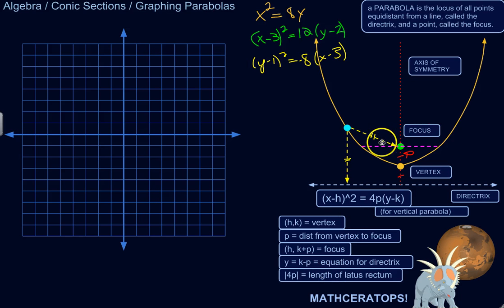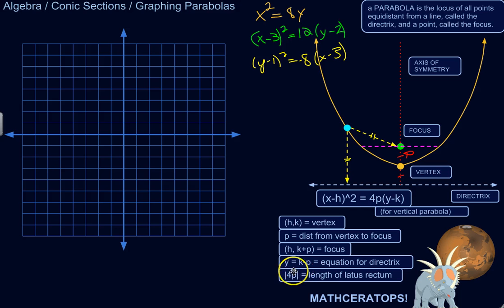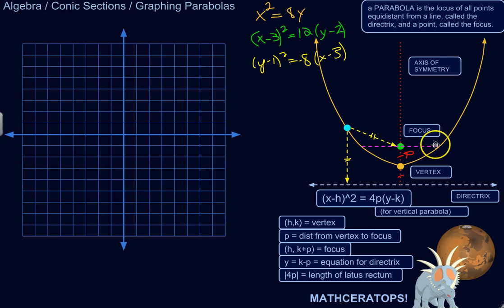There's a special line called the latus rectum, which is really useful for graphing. Its length is the absolute value of 4p, and it goes through the focus. I'll show you how to use that to just graph some simple parabolas.